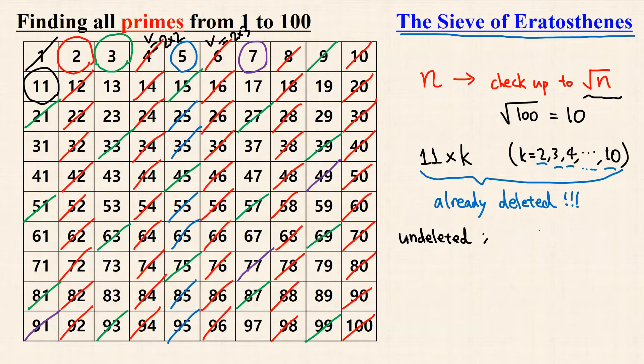So the smallest undeleted multiple of 11 must be 11 times 11, but this value is 121, which is greater than 100. So if we have already checked the multiples of square root of n, in this case, 10, we do not need to proceed further with larger numbers.